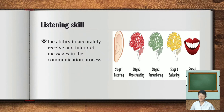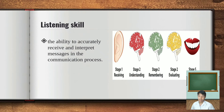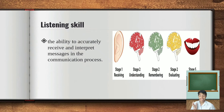Stage one, receiving, is the intentional focus on hearing a speaker's message. Stage two, understanding, is when we attempt to learn the meaning of the message, which isn't easy. Stage three, remembering, begins with listening — if you can't remember something that was said, you might not have been listening effectively. Stage four, evaluating — evaluations of the same message can vary widely from one listener to another. Stage five, responding, sometimes referred to as feedback, is your reaction to the message; it can be emotional and intellectual.